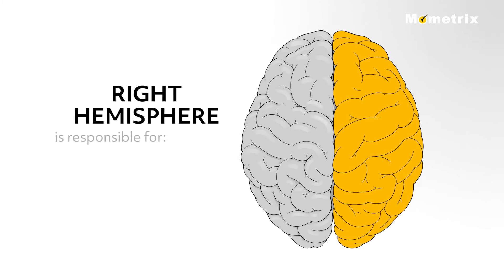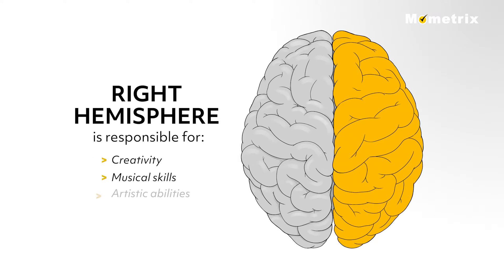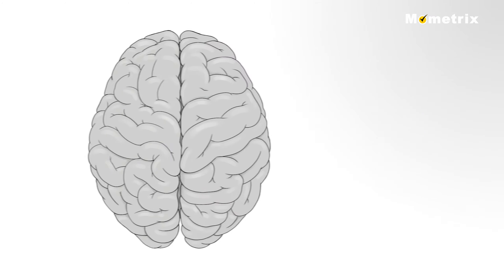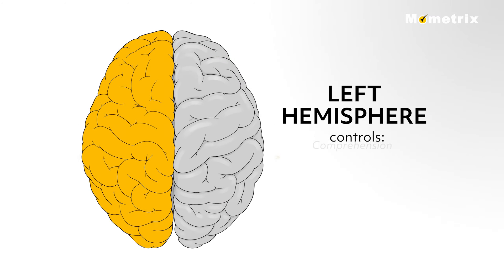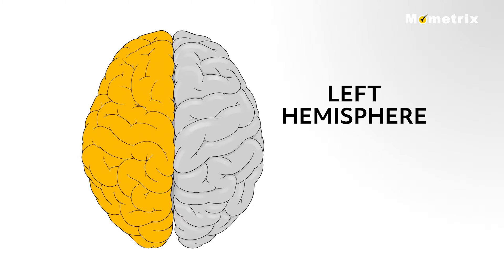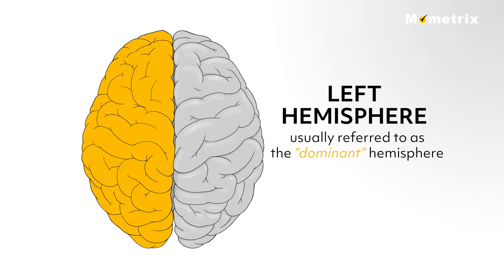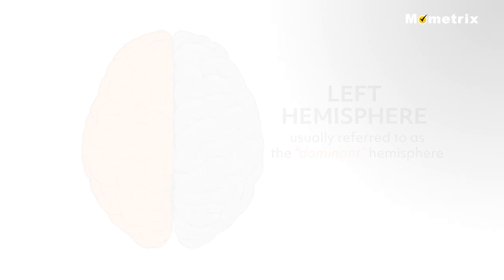The right hemisphere is responsible for creativity, musical skills, and artistic abilities. The left hemisphere controls comprehension, writing, speech, and language, and is usually referred to as the dominant hemisphere.